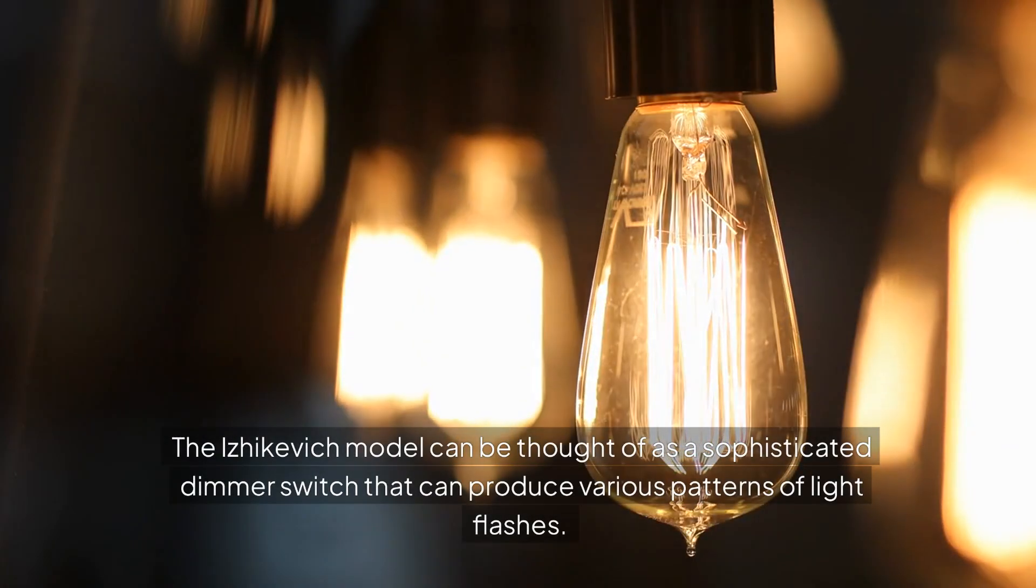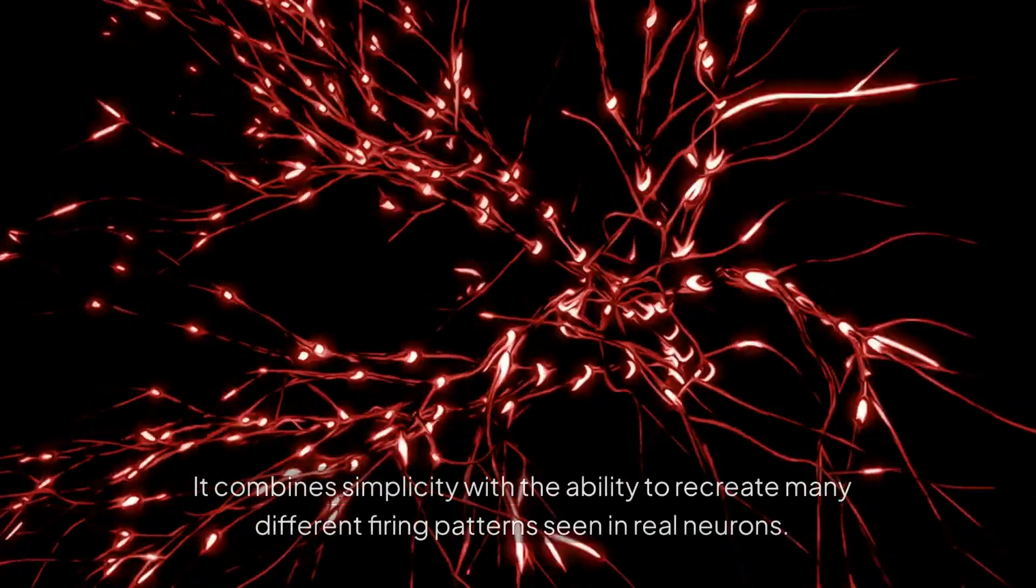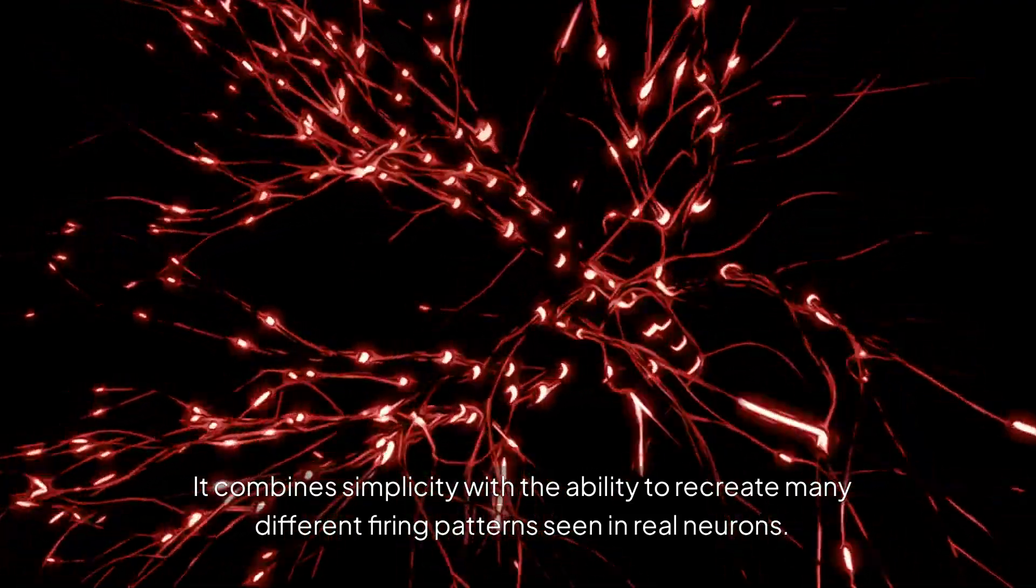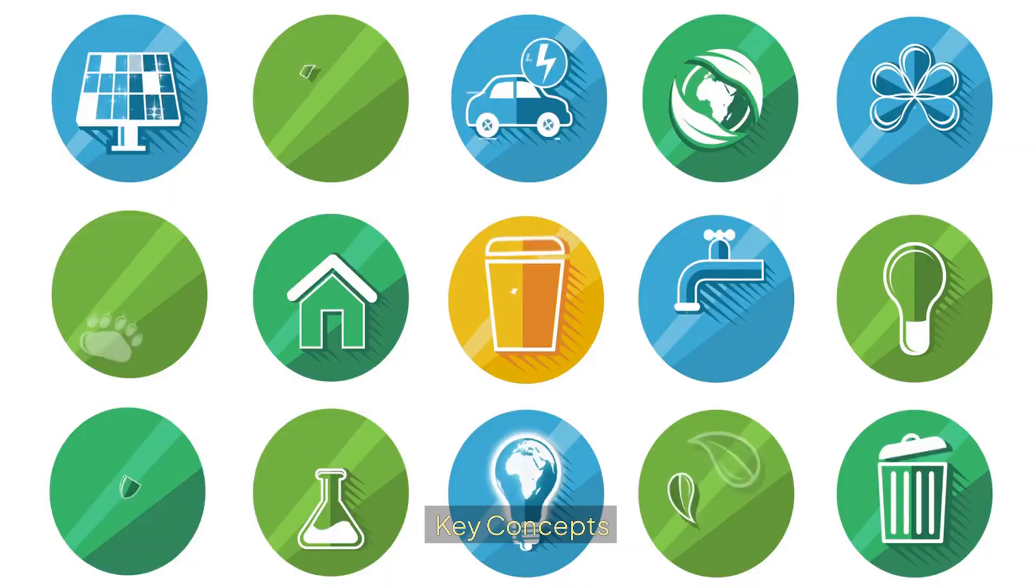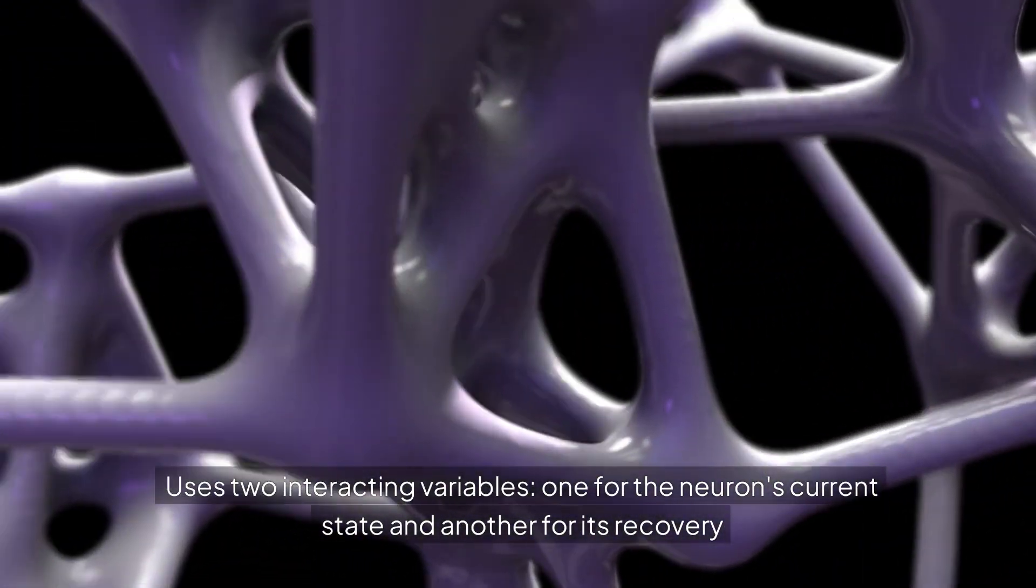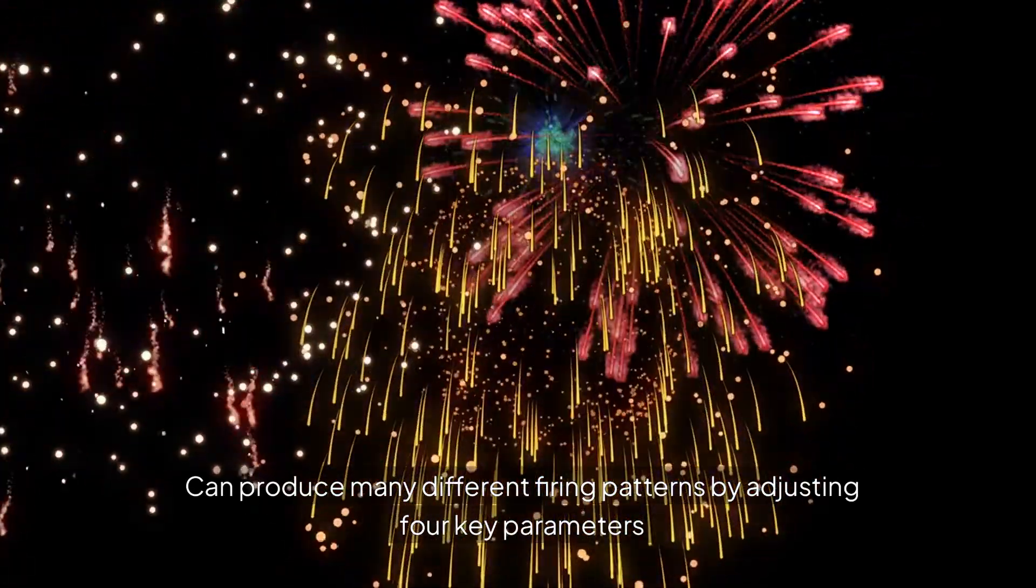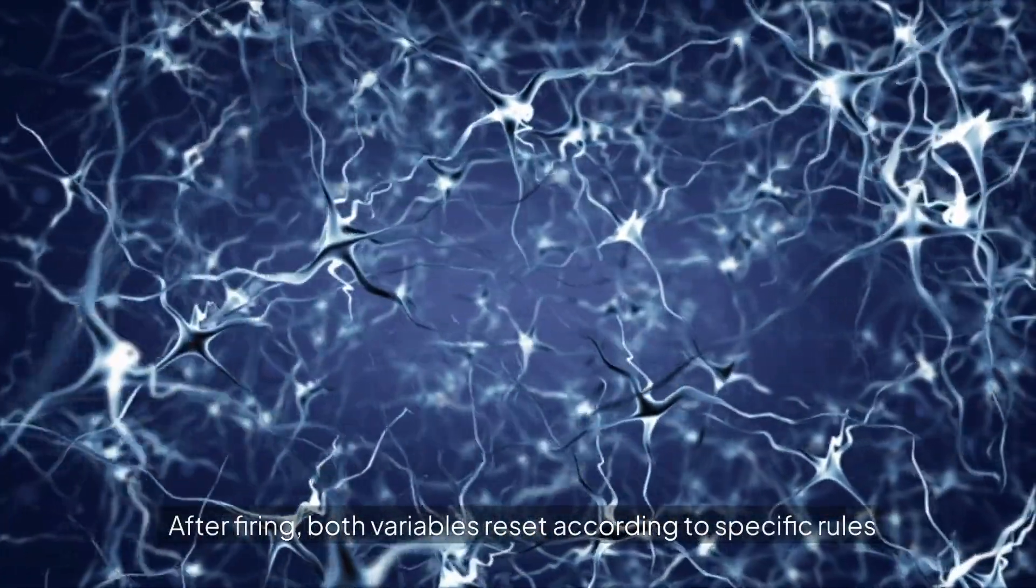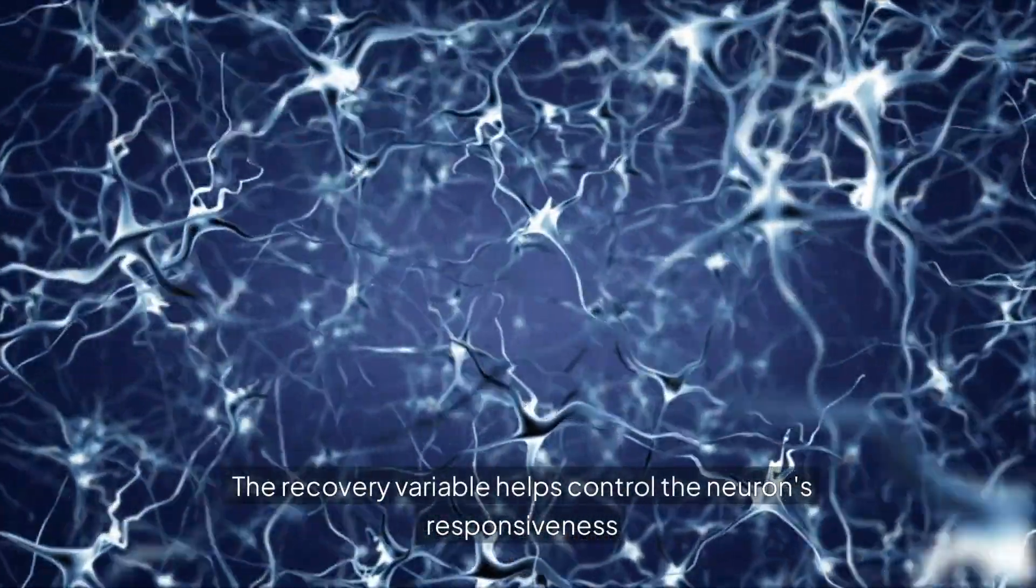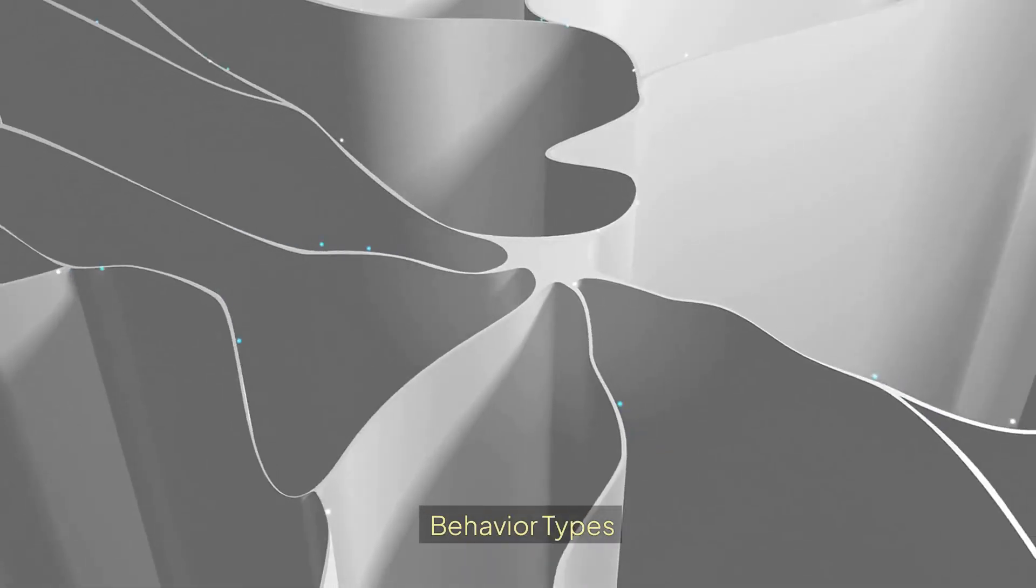Izhikevich model. The Izhikevich model can be thought of as a sophisticated dimmer switch that can produce various patterns of light flashes. It combines simplicity with the ability to recreate many different firing patterns seen in real neurons. Key concepts: uses two interacting variables—one for the neuron's current state and another for its recovery. Can produce many different firing patterns by adjusting four key parameters. After firing, both variables reset according to specific rules, and the recovery variable helps control the neuron's responsiveness.